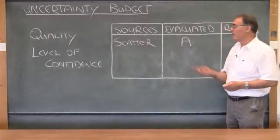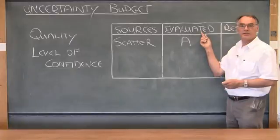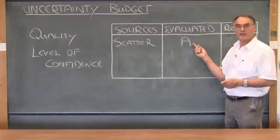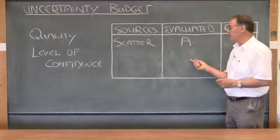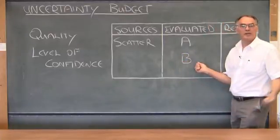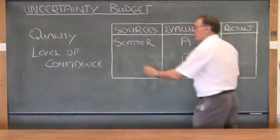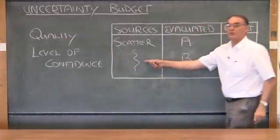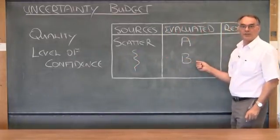By definition, any form of uncertainty evaluation that's not a type A evaluation is a type B. And there are many sources of uncertainty that may result in your having to do a type B evaluation of uncertainty.